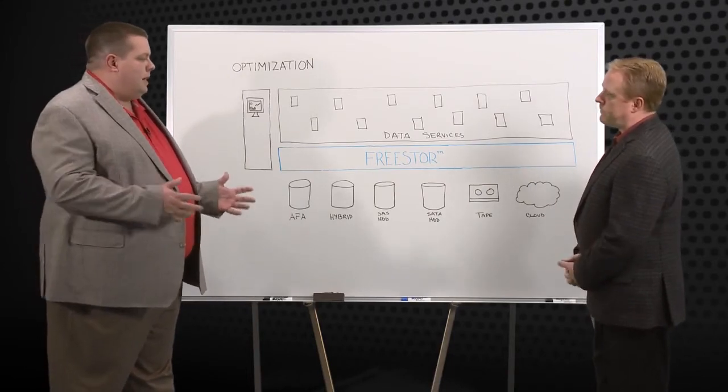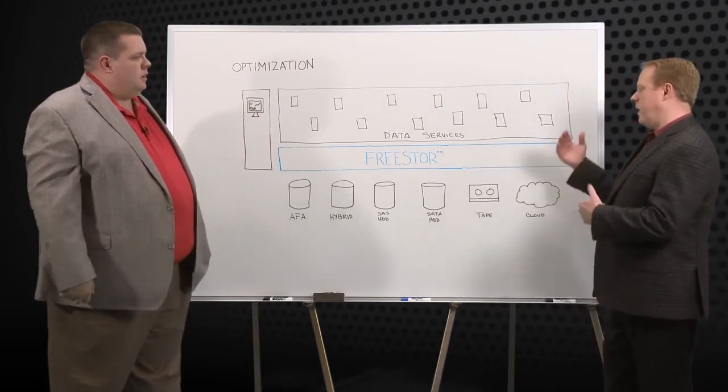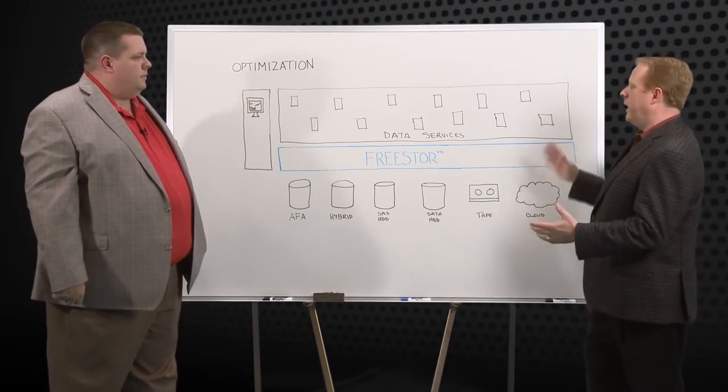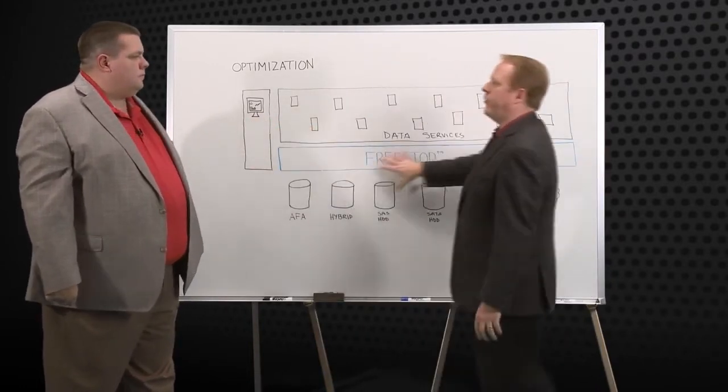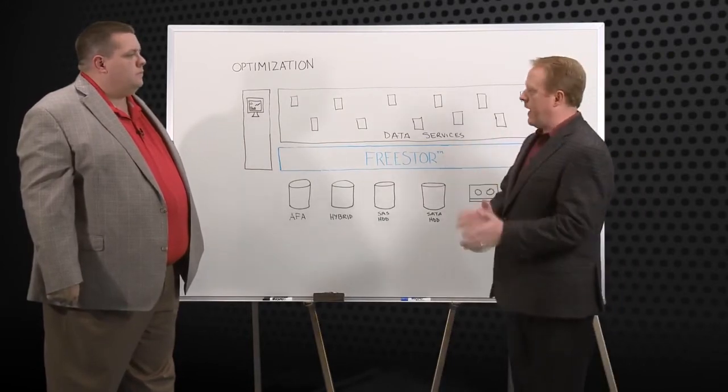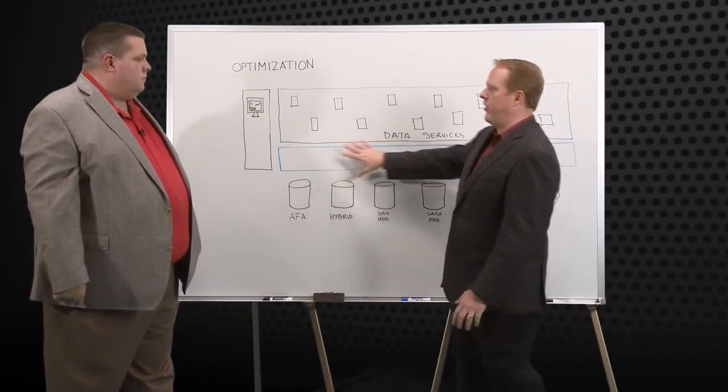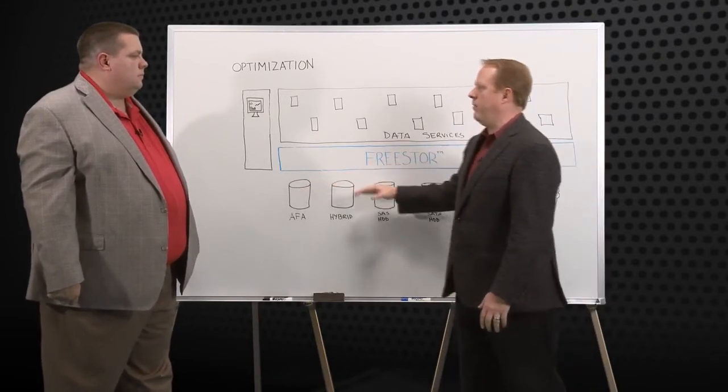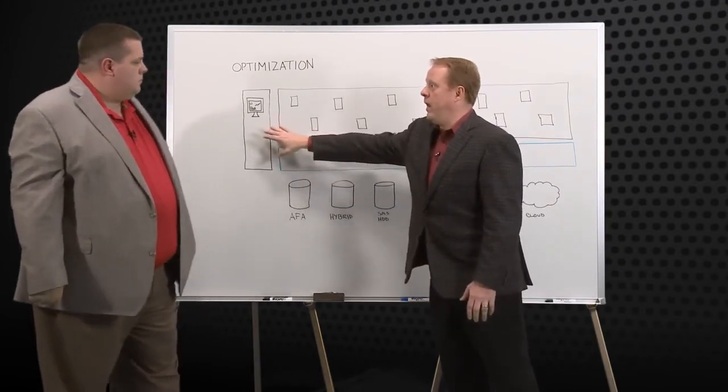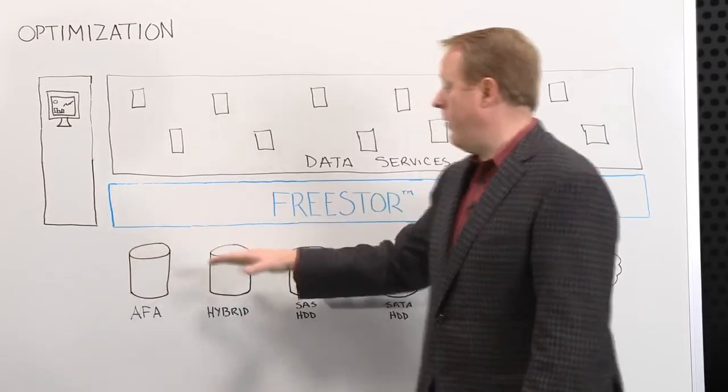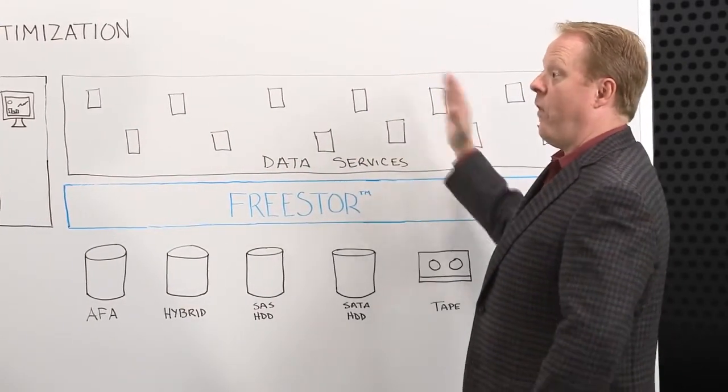So if I want to have some on flash, I can put flash in. If I need to take it because it's not being utilized or it's not as critical and move it to a lower cost medium, I can do that. If I want to make copies and put it on the most cost-optimized medium, I can do that, whether that's tape or even out to the cloud. Now, we've talked a little bit about all of this stuff, but there's also three other pillars, and how do those work into the optimization story? Again, there's a lot of different angles of optimization that we can do. One of the things that we do is the fact that with FreeStore, we're one platform.